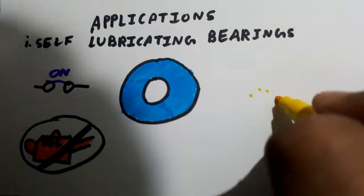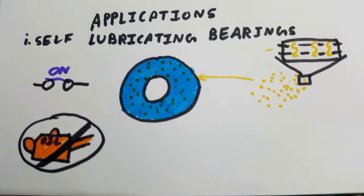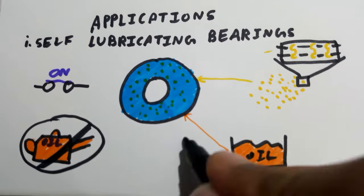These bearings work due to the temperature rise caused by friction from the rotating shaft, inducing a reduction in the viscosity of oil, thereby increasing its flow rate. Hence, the oil is pulled out from the pores and starts to circulate rapidly.